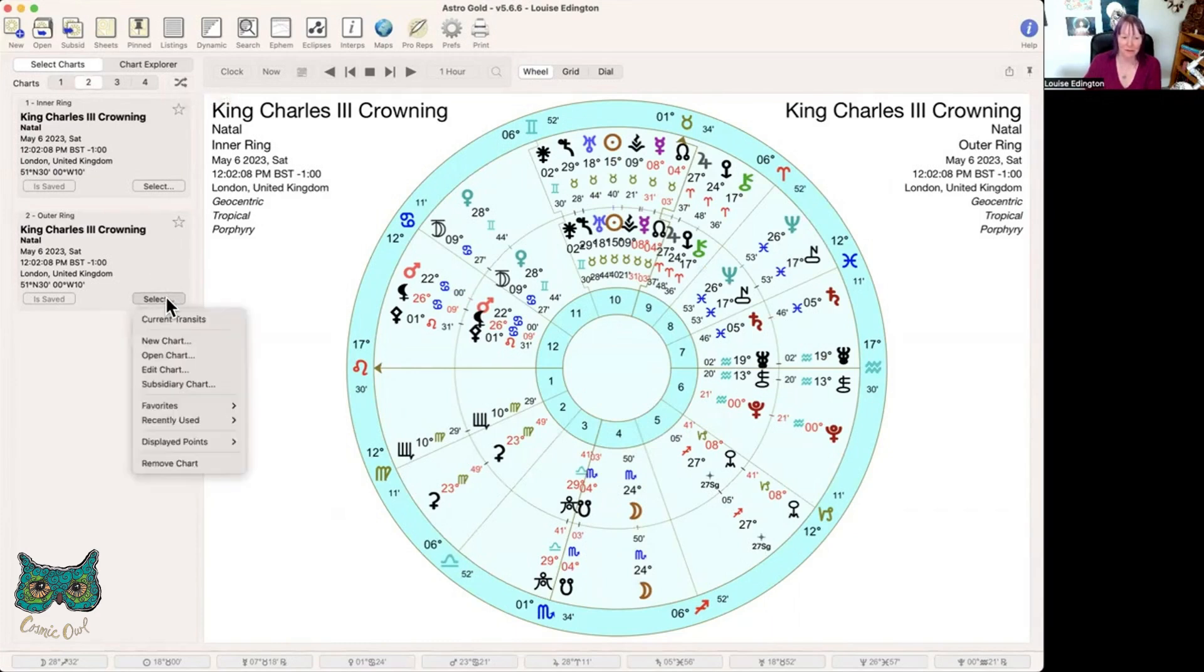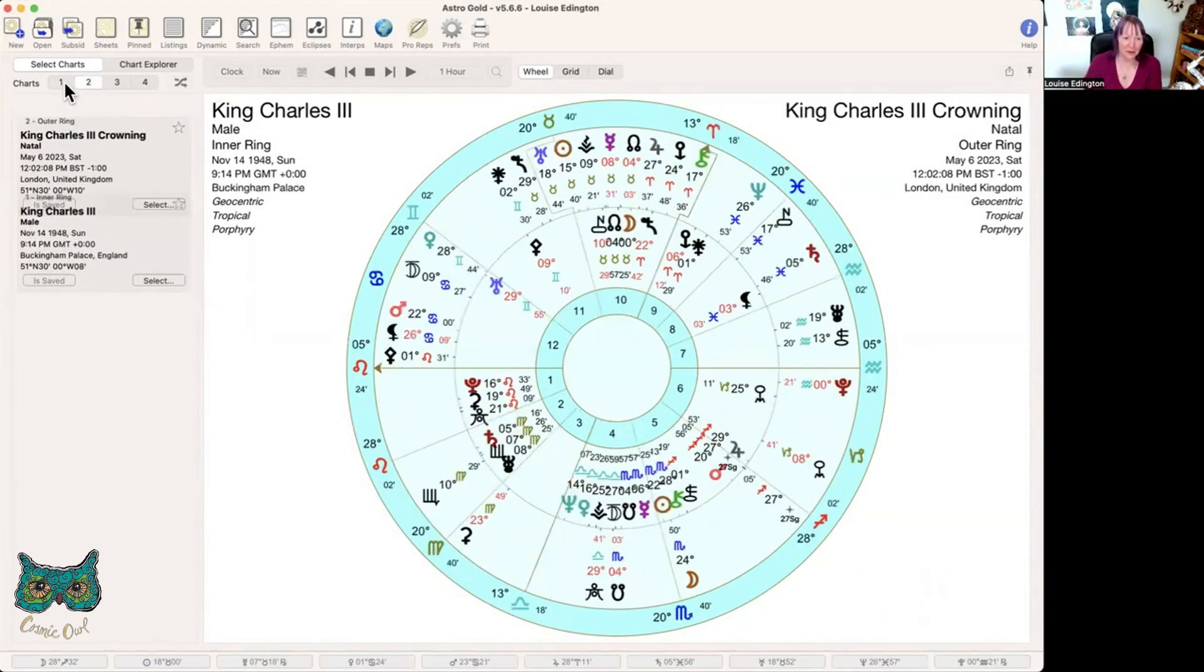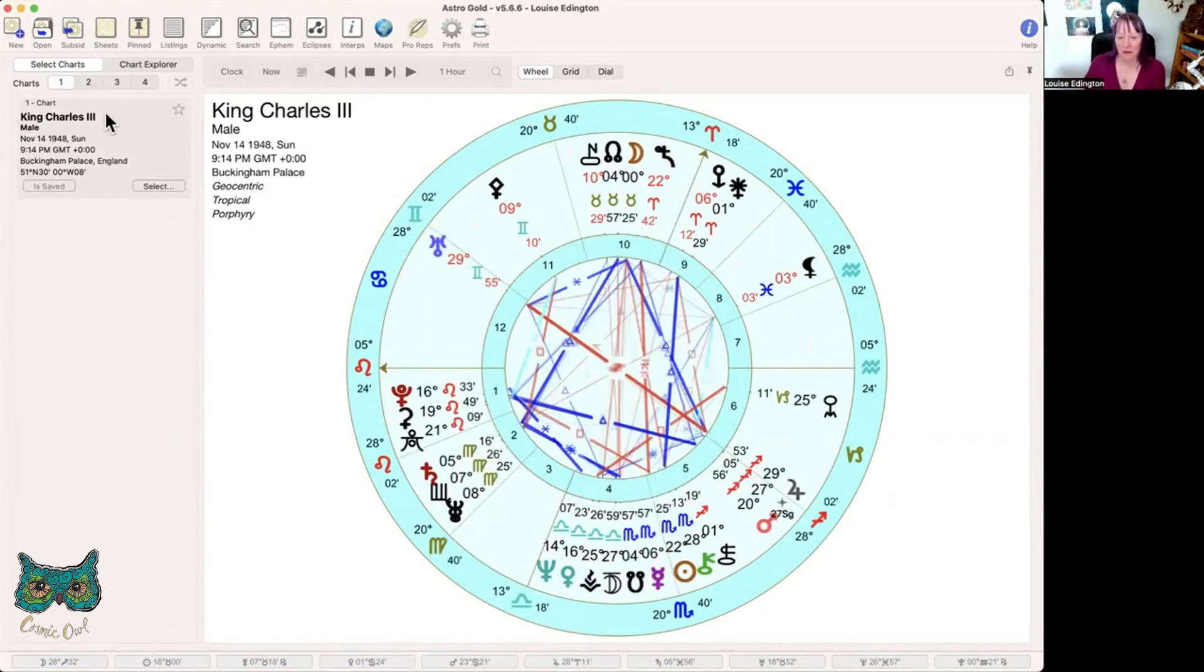We're going to look at his chart on its own first and then with the actual moment of the crowning. He's Leo rising too, royalty. His Sun is in the fifth house, which is very much also about Leo energy, letting yourself shine. But he's a Scorpio. He's very determined and very deep, can be a bit pompous at times. Leo rising can be very pompous.